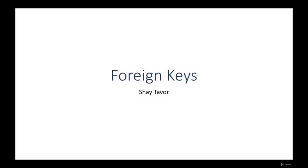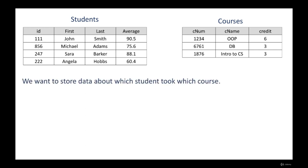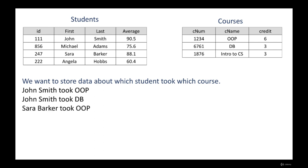In this lecture I want to talk about foreign keys. Let's go back to our two tables — the students table that saves data about students, and the courses table that saves data about courses. Now suppose you want to store data about which student took which course. For example, John Smith took the course OOP, and John Smith also took the course Database (DB), and Sarah Berker took the course OOP.